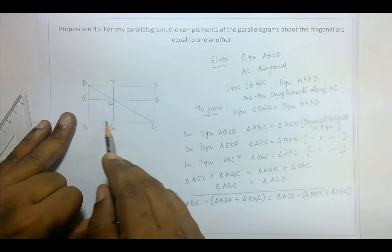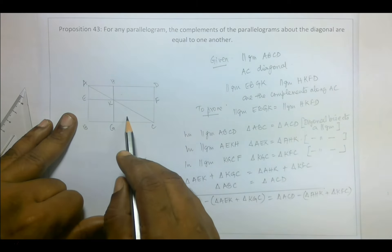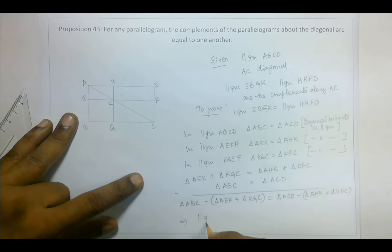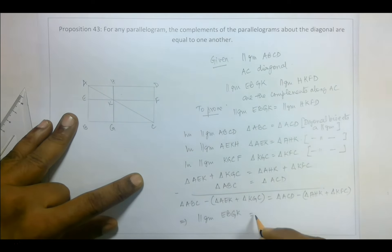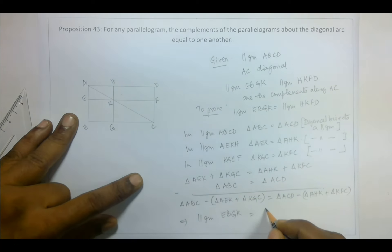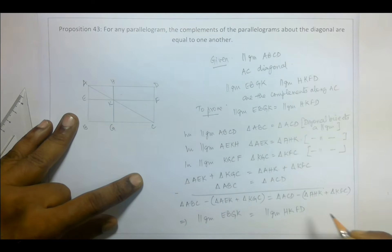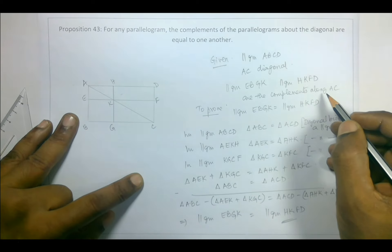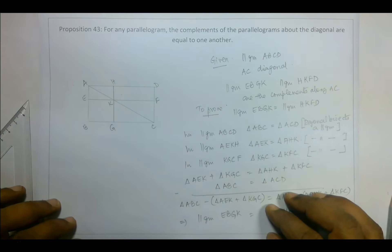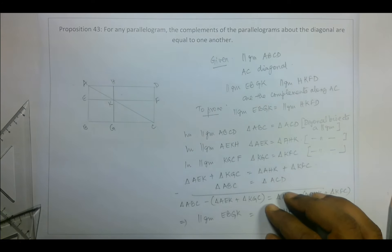When we look at triangle ABC and subtract triangle AEK and triangle KGC, we are left with parallelogram EBGK. And from triangle ACD, removing triangle AHK and triangle KFC, we are left with parallelogram HKFD. Therefore parallelogram EBGK equals parallelogram HKFD, which is what we had to prove. That is Proposition 43.